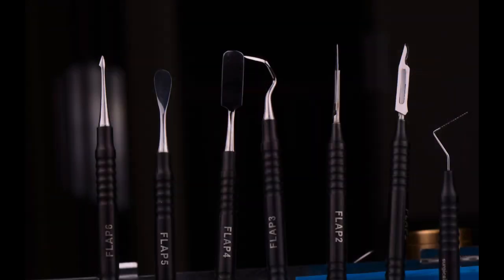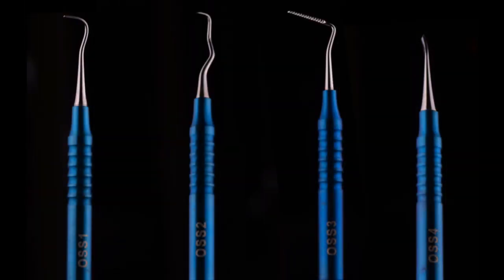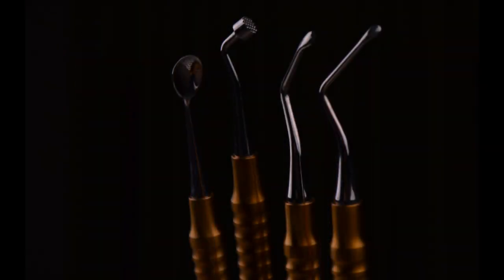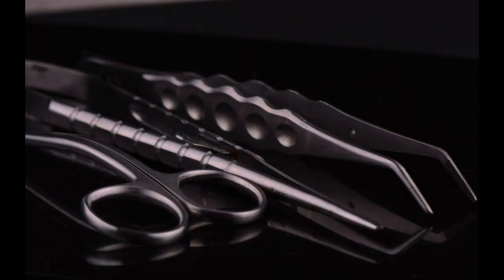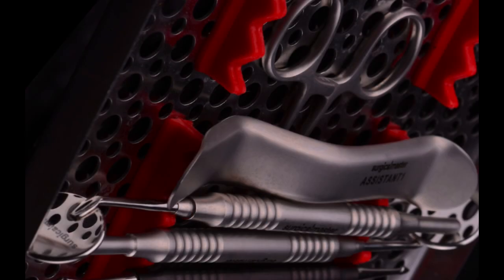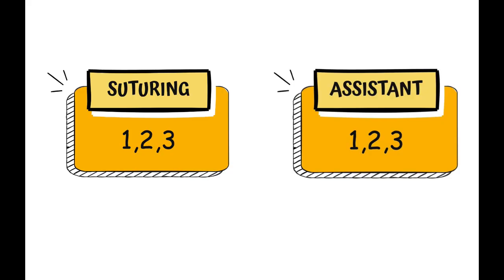In the previous videos we talked about the six different incision and flap instruments, the osseous instruments, and the bone grafting instruments. The two last groups of instruments are suturing instruments and assistant instruments. Each group has three critical tools.